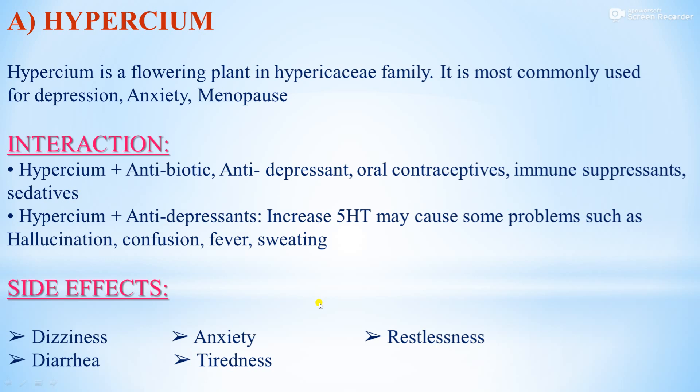Side effects of Hypericum include dizziness, anxiety, restlessness, diarrhea, and tiredness. Hypericum is a flowering plant in the Hypericaceae family, most commonly used for depression, anxiety, and menopause. Interactions involve antibiotics, antidepressants, oral contraceptives, immune suppressants, and sedatives.